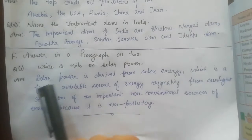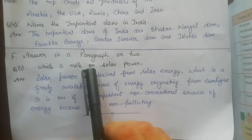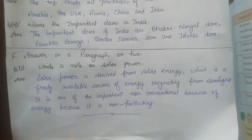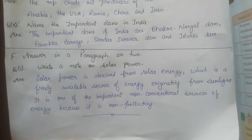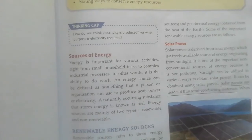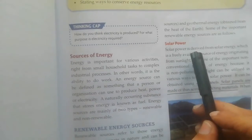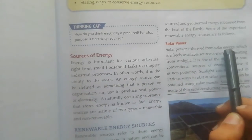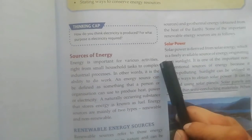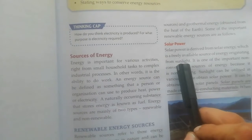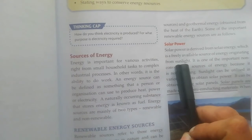Answer in a paragraph or two. Write a short note on solar power. Solar power is derived from solar energy, which is a freely available source of energy originating from sunlight.